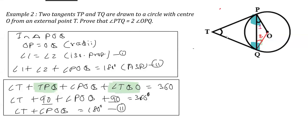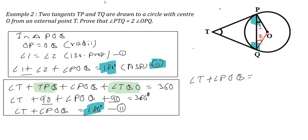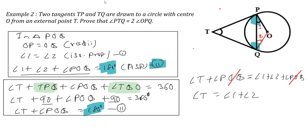Now, from these two equations, as you can see, in both equations the sum is 180 degrees. So we can equate the left-hand sides: since both equal 180 degrees, angle T plus angle POQ must be the same as angle 1 plus angle 2 plus angle POQ. The angle POQ cancels from both sides, so we get angle T is equal to angle 1 plus angle 2.